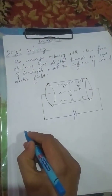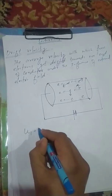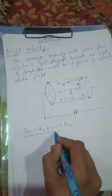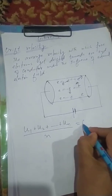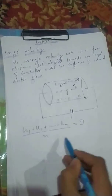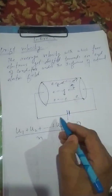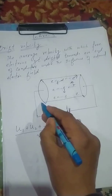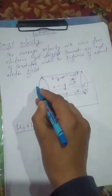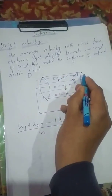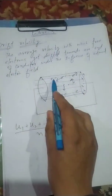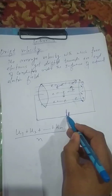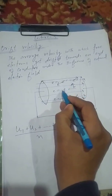The average velocity of electrons initially is equal to zero because they move in random directions. Therefore, when an electric field is applied, the electrons experience a force in the direction of the electric field.